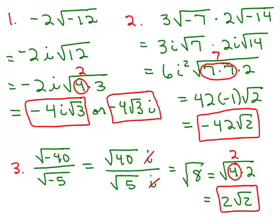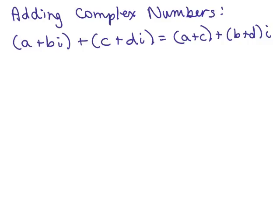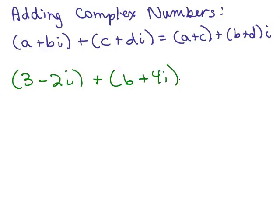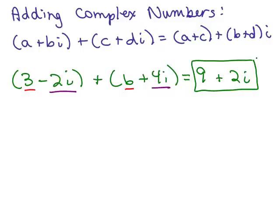Now we're going to add and subtract complex numbers. To add two complex numbers a + bi and c + di, we simply add the real parts (a and c) and add the imaginary parts (b + d). For example, if we have (3 − 2i) + (6 + 4i), we add 3 and 6 to get 9, and we add negative 2i and positive 4i to get plus 2i. It's just like adding like terms, except i is not a variable — it's actually a number. The result written in standard form a + bi is 9 + 2i.